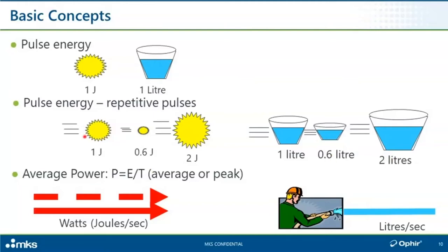Or I may have a series of pulses but not really be interested in the energy of each individual one — only in the overall average rate of flow of energy per second. If I'm only interested in the rate of flow of energy, that is what we call power. A watt is one joule per second. So if each pulse has one joule of energy and pulses come in at one hertz, my average power is one joule per second, or one watt. Or I may have a continuous beam that's not pulsed at all — then we can only speak about the rate of flow, not a fixed quantity, so we're talking only about power.